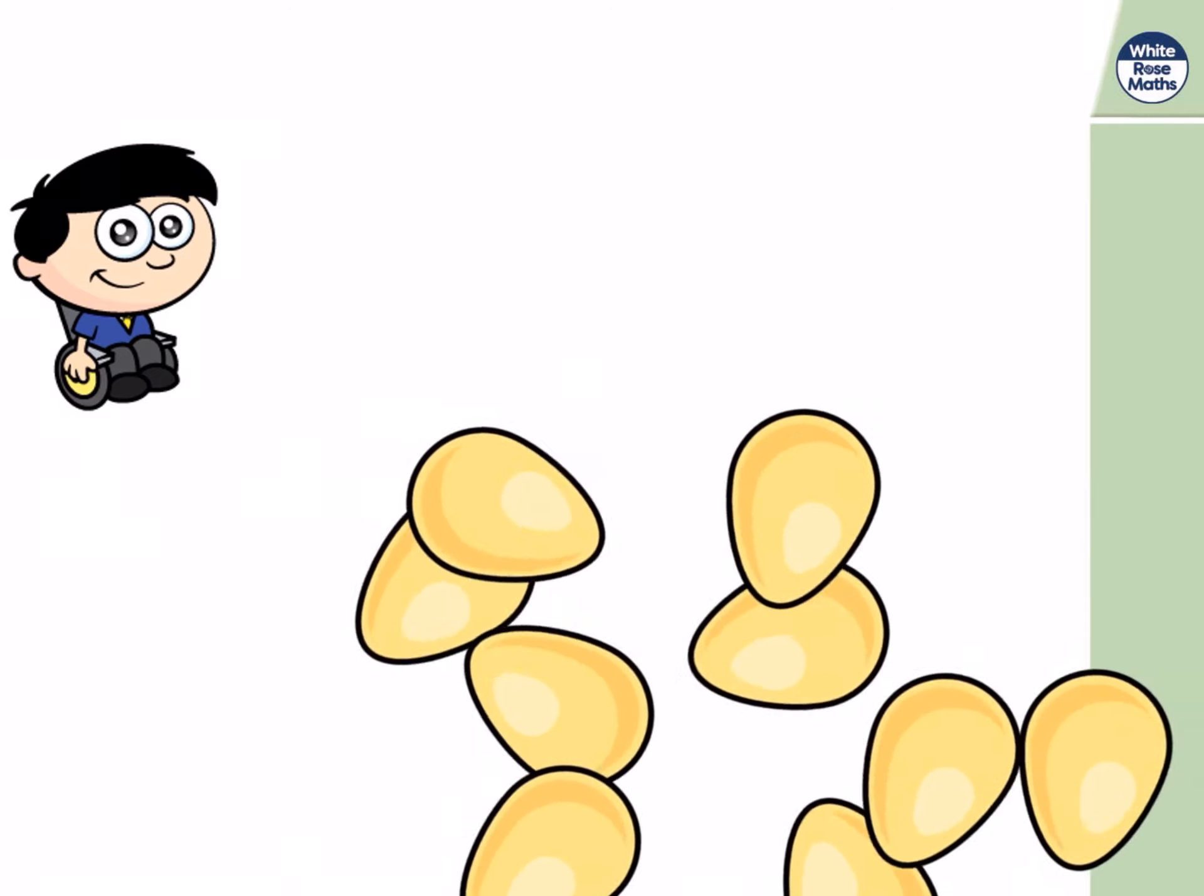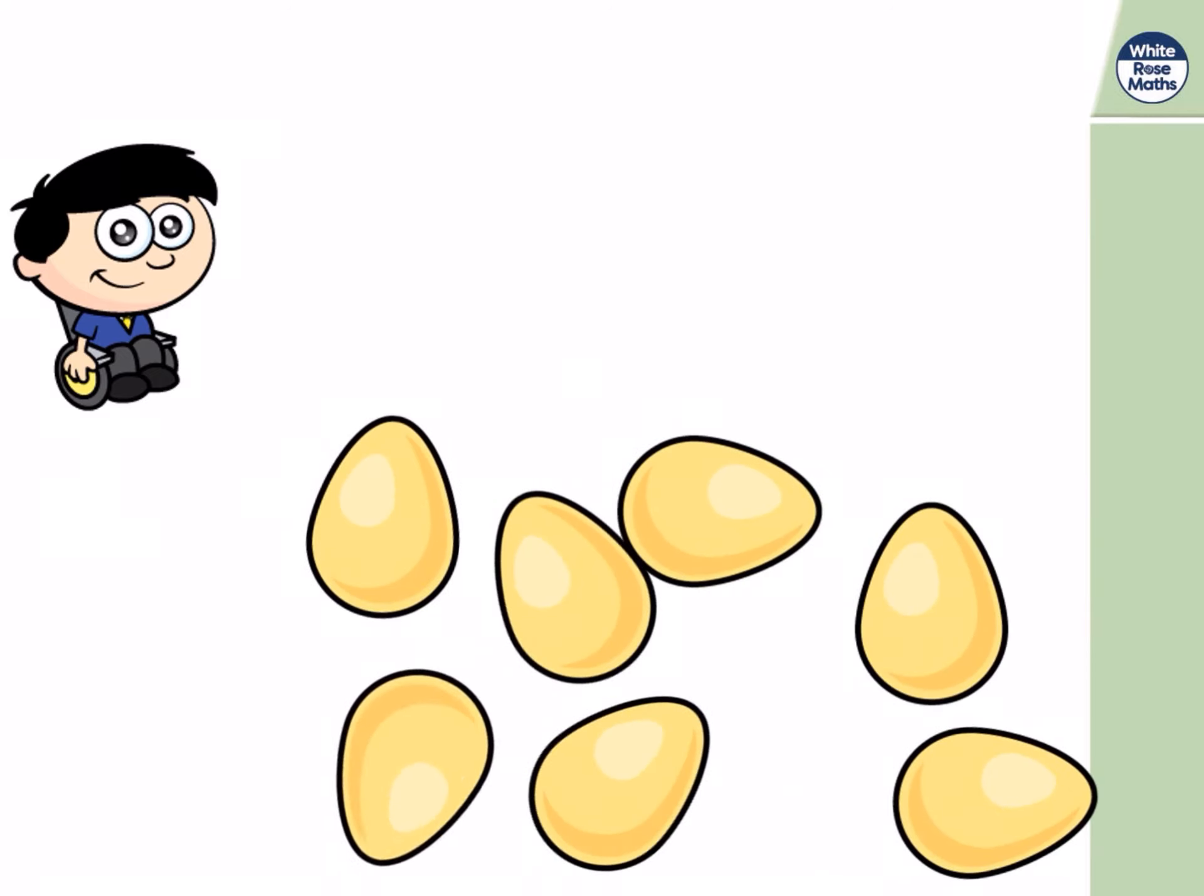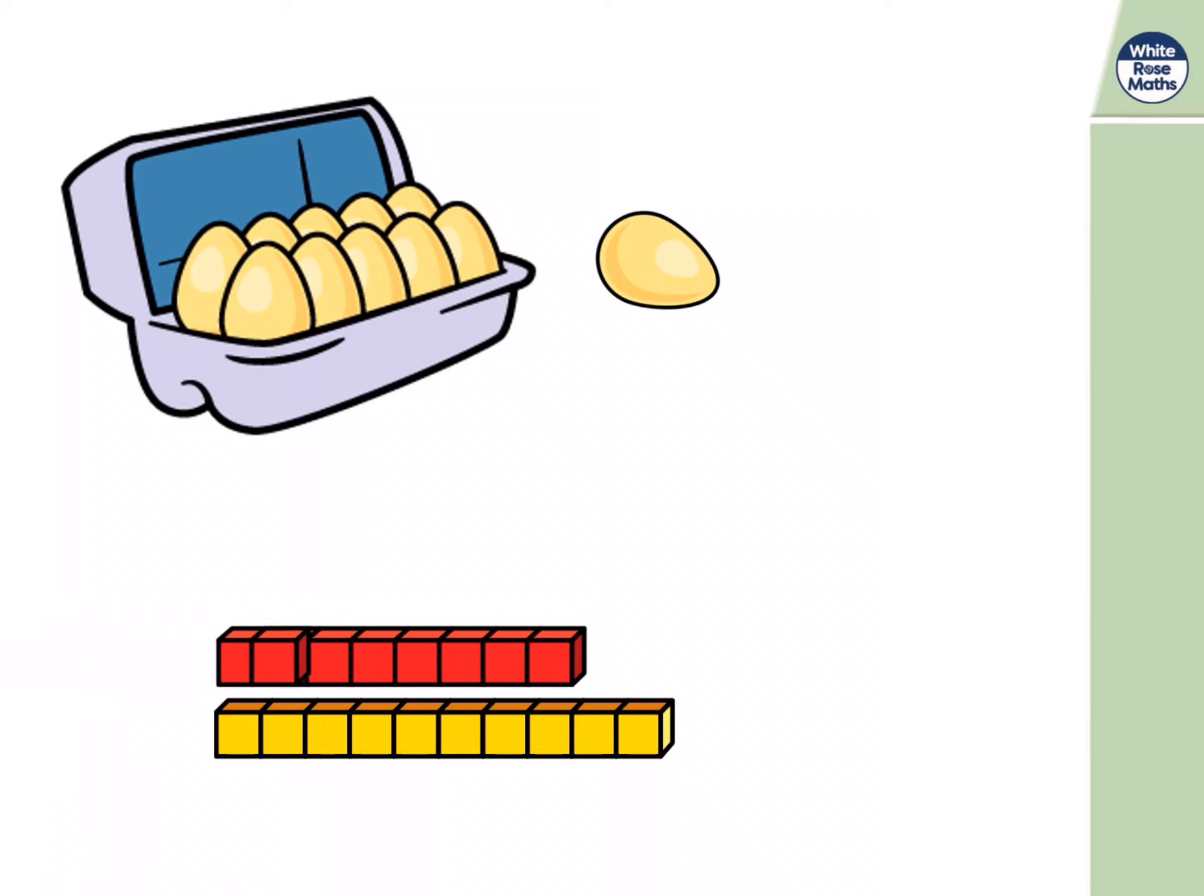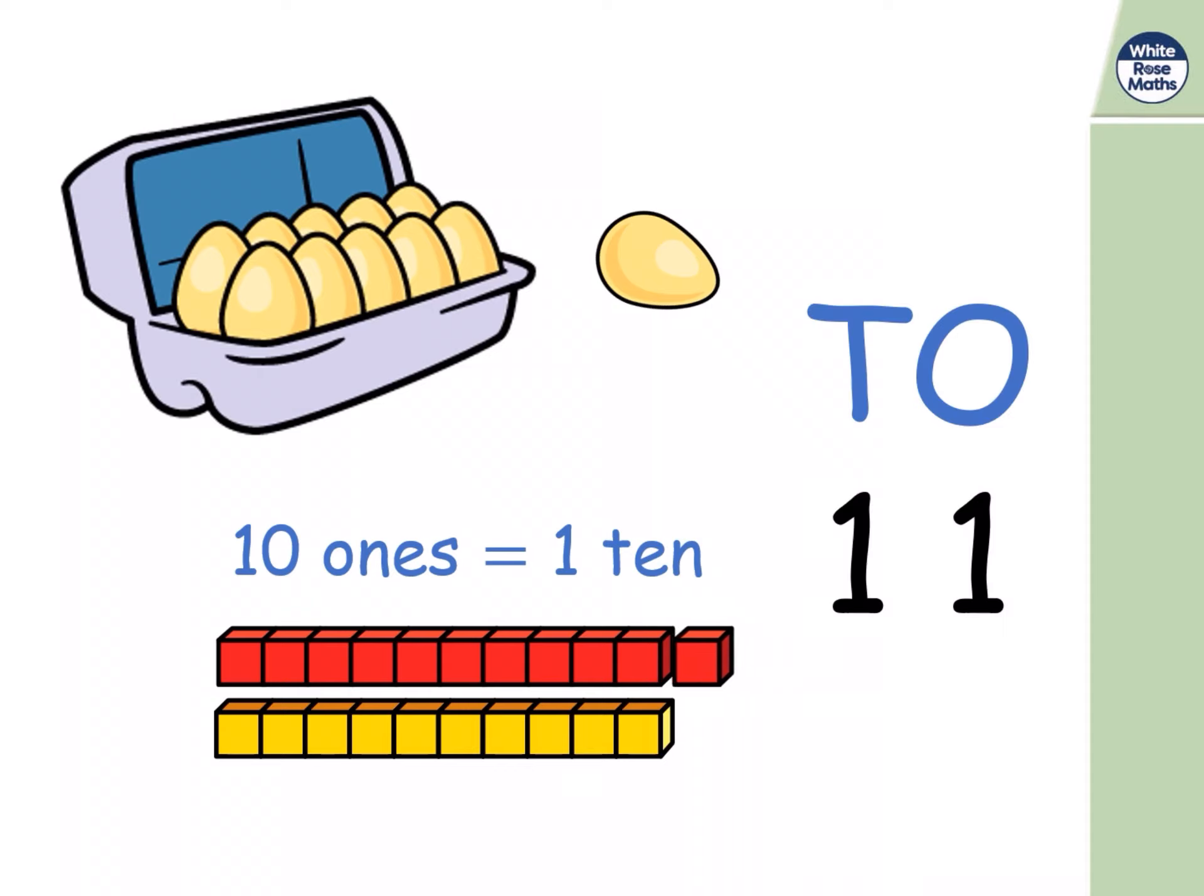Oh no! The eggs are rolling everywhere. Let's get them back in the box. That's better. We've got a box of ten eggs now and one extra. And here's a base ten ten rod. Here are ten ones. Do you notice that ten ones are equal to one ten? A bit like the eggs that were all rolling around. We had eleven eggs rolling around. And now we've got a box of ten and one extra. There's the extra one.